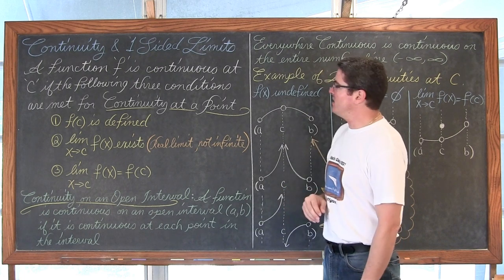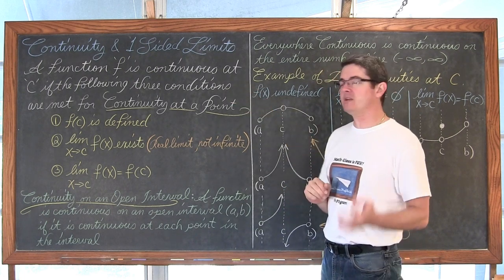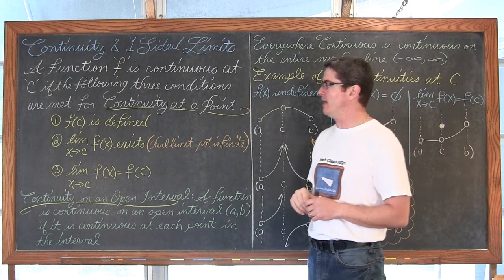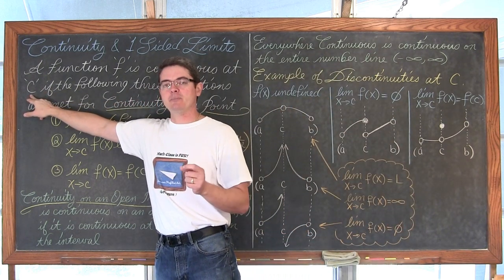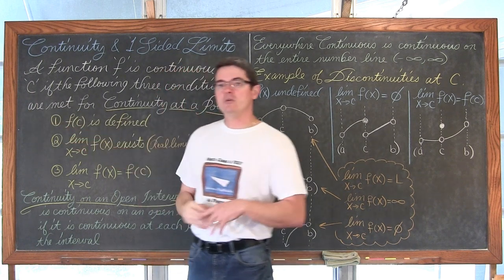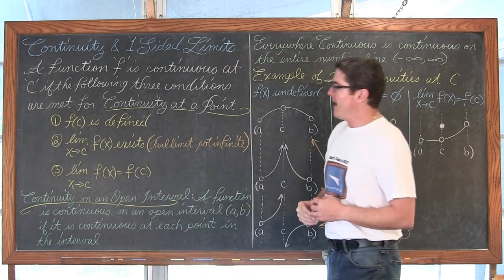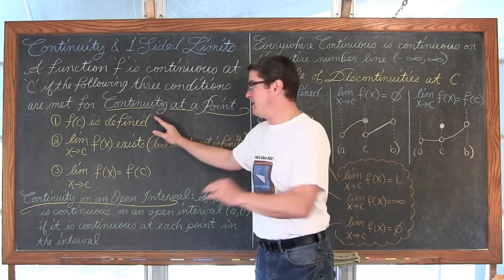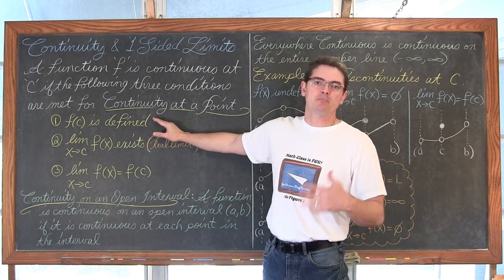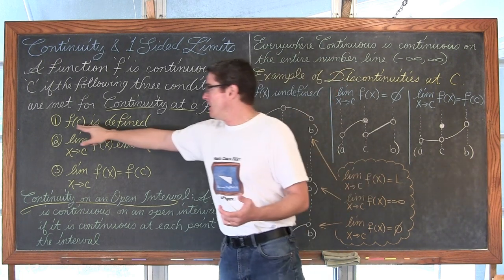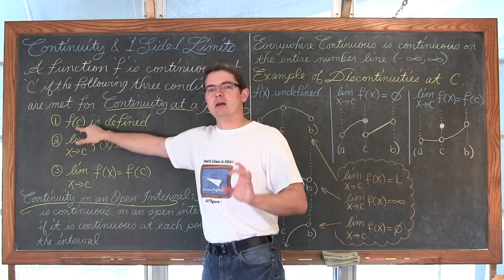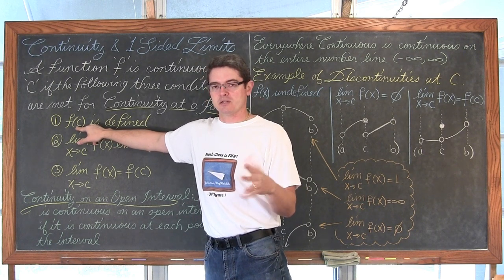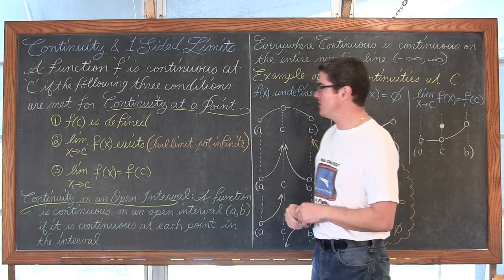A function f is continuous at c if three conditions are met — we are talking about continuity at a point. The value of c is an independent variable, some value you can plug into the function. First, we need to make sure that the function at c is defined — that I can plug it in and get an answer. It should not be a value where there is a hole in the graph or a vertical asymptote, which are very common places of discontinuity.